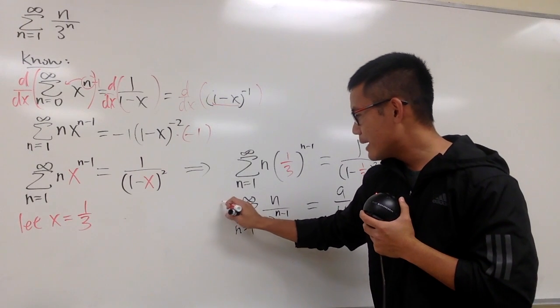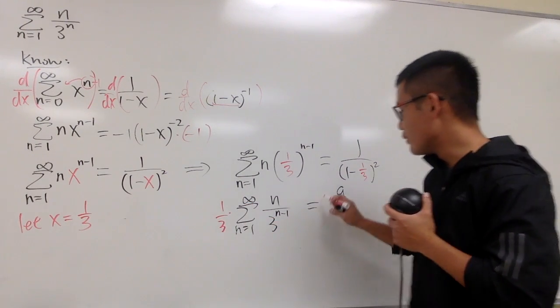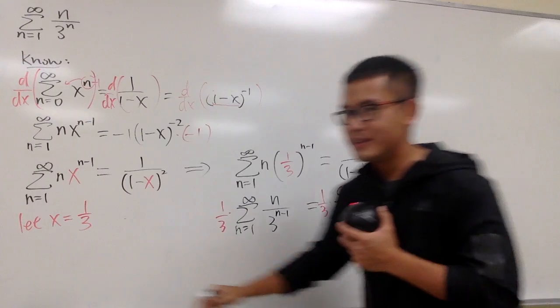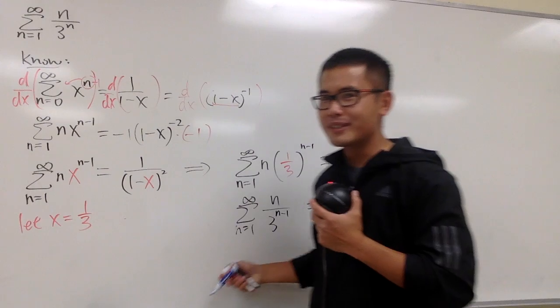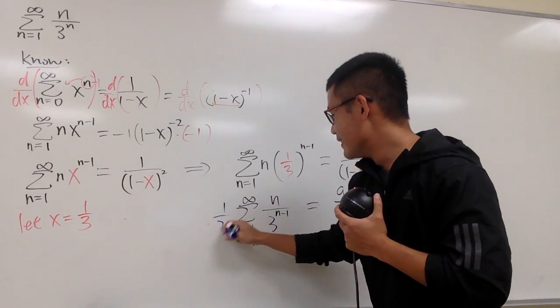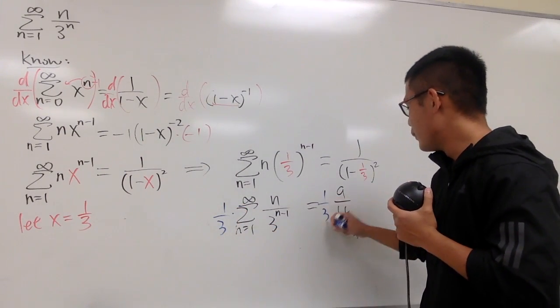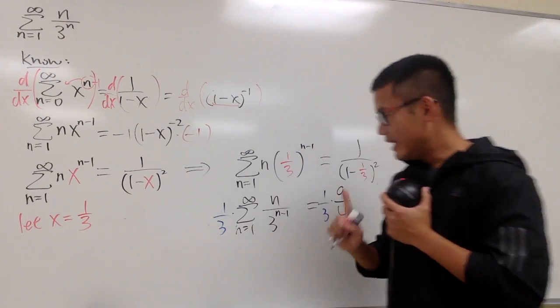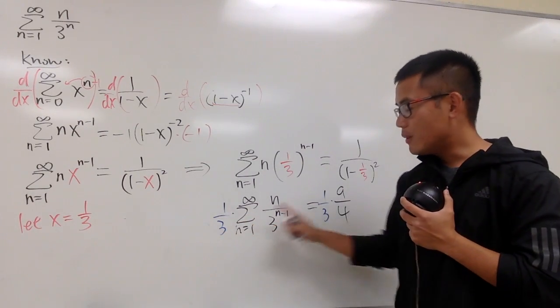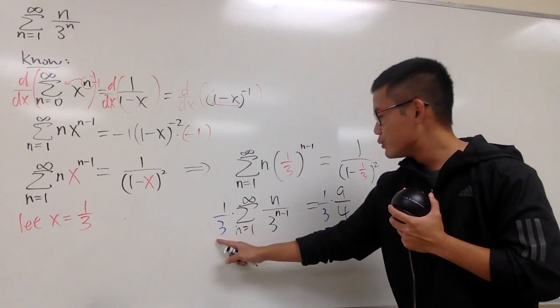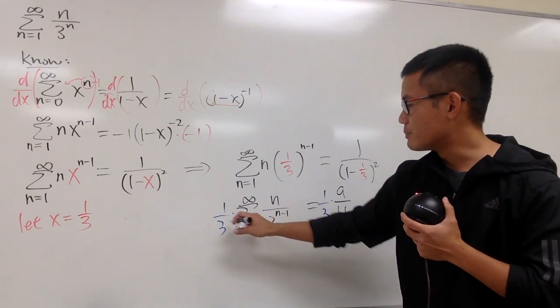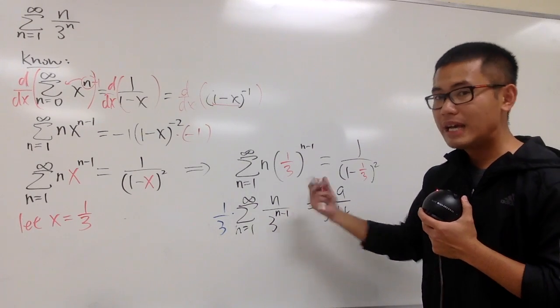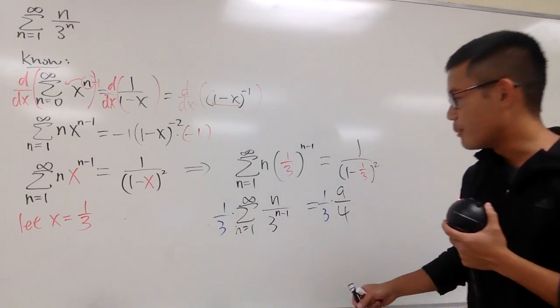Well, why don't I multiply by 1 third on both sides? And actually, let me do this in blue, so that people will comment down below. Let's multiply 1 third on both sides, and you see, when you multiply 1 third on both sides, 3 times this, you get exactly, well, 3 to the first power times 3 to the n minus 1 power in the exponents. You get exactly 3 to the nth power on the denominator.